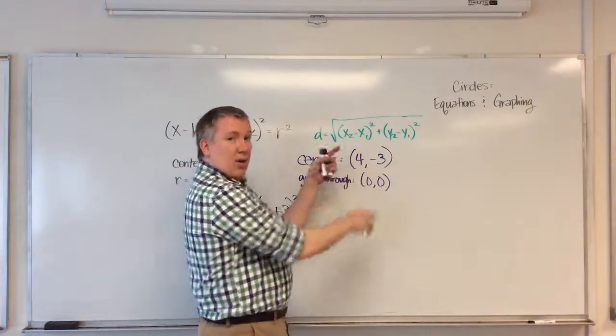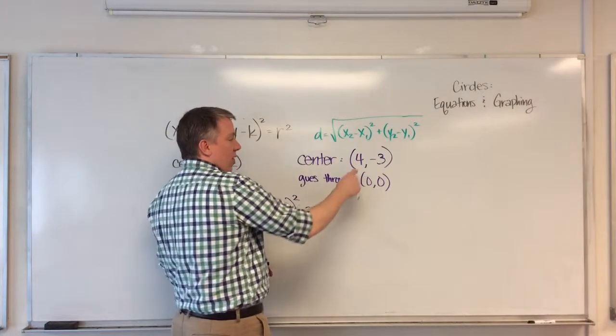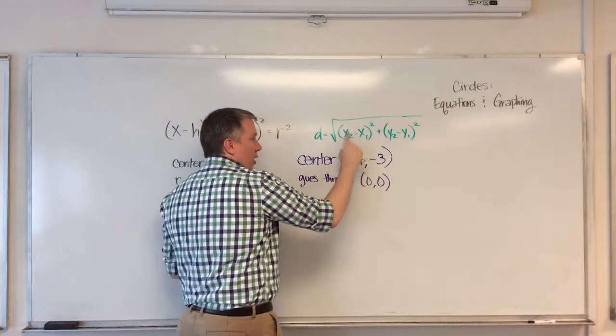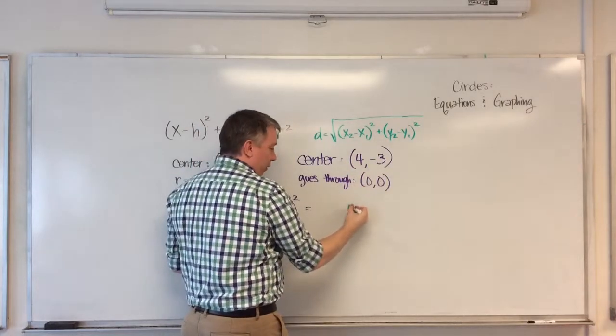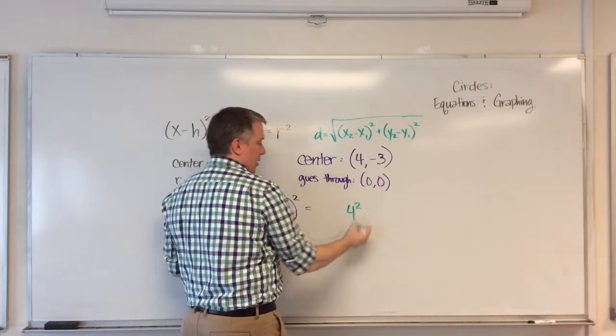So I'm just going to, it doesn't really matter the order as long as you're consistent. So I'm going to go this way. So one of the x's minus the other, 4 minus 0. So that's 4. And then I square it.